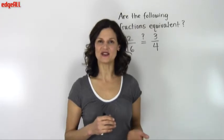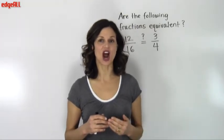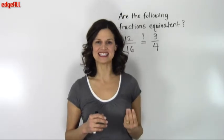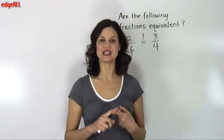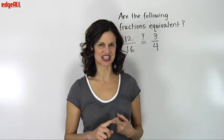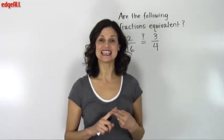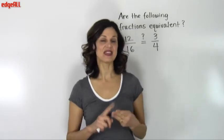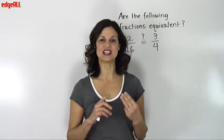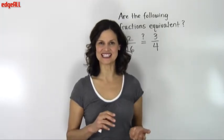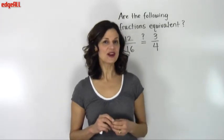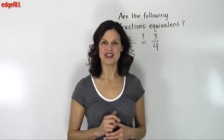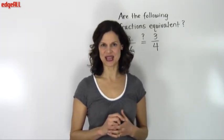You can find out if two fractions are equivalent by three different methods. The first is using cross multiplication. The second is simplifying or reducing the fractions. And the third is making the denominators of the two fractions the same. We are going to learn the cross multiplication method in this video. Other methods are discussed in other videos.